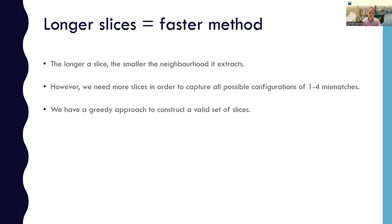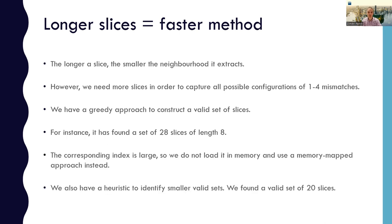By valid, what we mean is that it guarantees that all the configurations of one to four mismatches are going to be captured. For instance, if we set slice length equal to eight, we're able to construct a valid set of 28 slices of length eight that are going to capture all configurations of one to four mismatches. And for each of these 28 slices, the neighborhood is much smaller than for slices of length four. In parallel, we're also working on trying to identify smaller sets of slices.